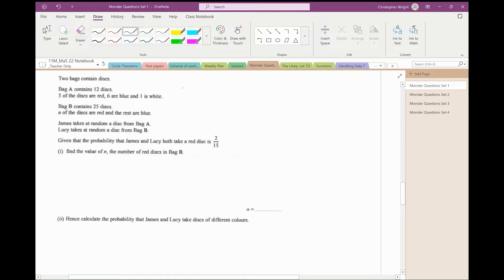Two bags contain discs. Bag A has got five red, six blue and one white. Bag B has got N red and the rest blue. James takes at random a disc from A and Lucy takes one from B. Given that the probability that they both take a red disc is 2 fifteenths, find the value of N. The probability that the first disc is red is 5 twelfths, and the probability that the second disc is red is N out of 25. That product has to equal 2 fifteenths. I can cancel, so on the left-hand side, I get N over 60, and that equals 2 fifteenths. Multiply both sides by sixty, and that tells me that N is eight. So bag B has got eight red and seventeen blue out of its twenty-five discs.